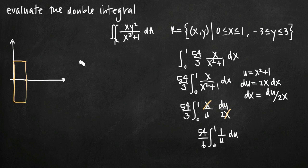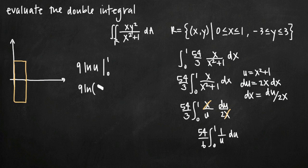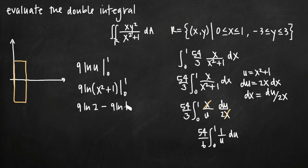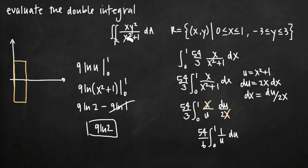54/6 simplifies to 9, and the integral of 1/u is ln|u|, so we have 9·ln|u|. Back-substituting u = x²+1, we evaluate 9·ln(x²+1) from 0 to 1. Plugging in 1: 9·ln(1²+1) = 9·ln(2). Plugging in 0: 9·ln(0+1) = 9·ln(1) = 0. So the final answer is 9·ln(2) — the volume above the rectangle and below the function xy²/(x²+1).